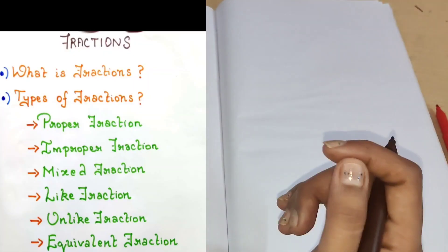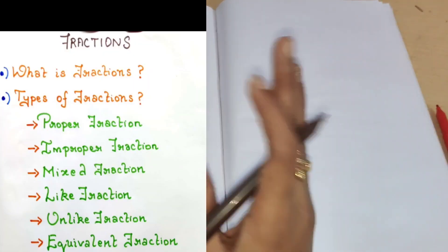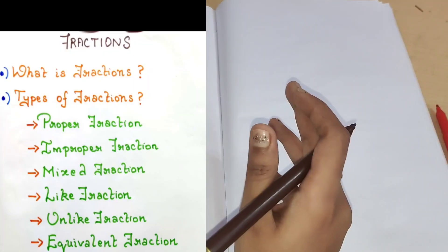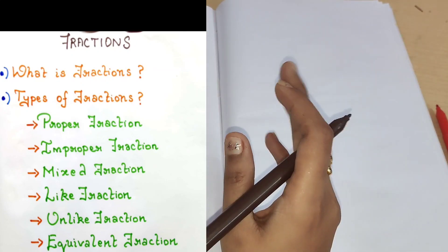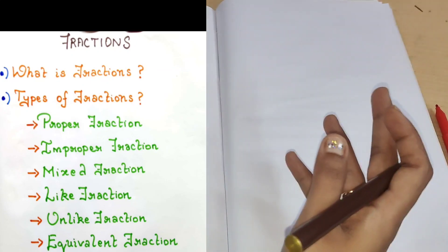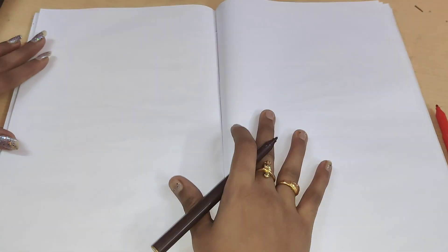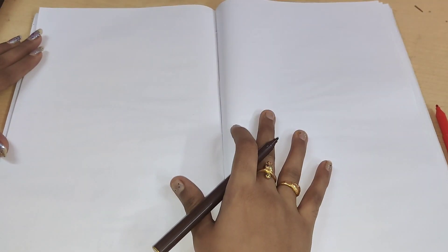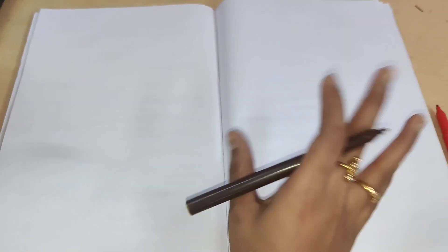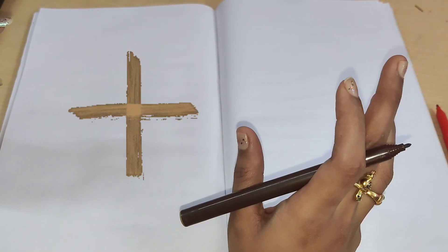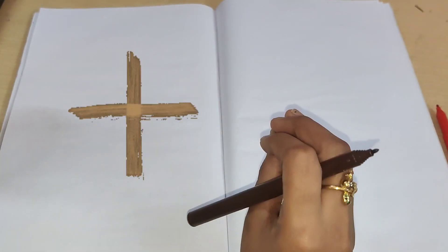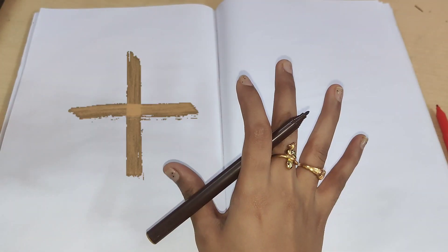Then we saw types of fractions: like fraction, unlike fraction, mixed fraction, proper fraction, and improper fraction. So today what we are going to do is apply basic arithmetic operations to our fractions.